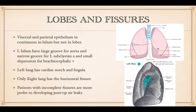Only the left lung will have the cardiac notch for the heart, and a little projection called the lingula. Only the right will have the horizontal fissure. The fissures are important because they separate the lungs and they're useful in lobectomies. Patients who have incomplete fissures are more prone to develop post-operative air leaks.